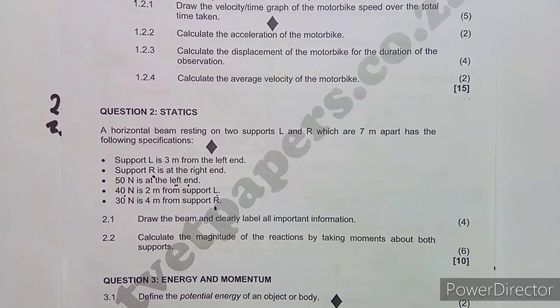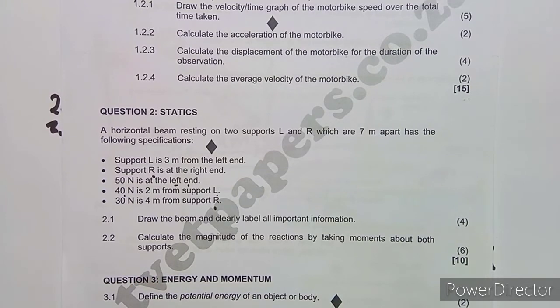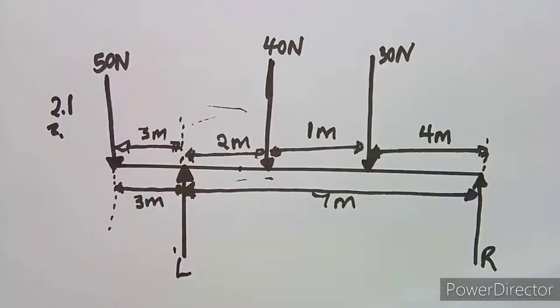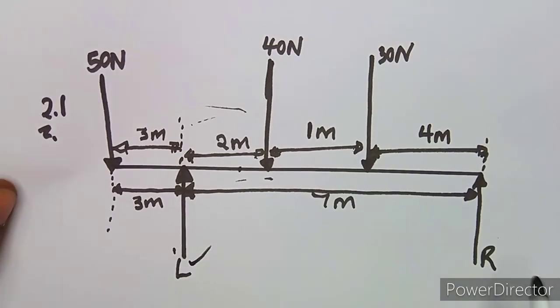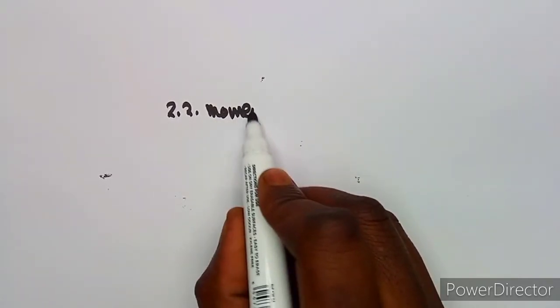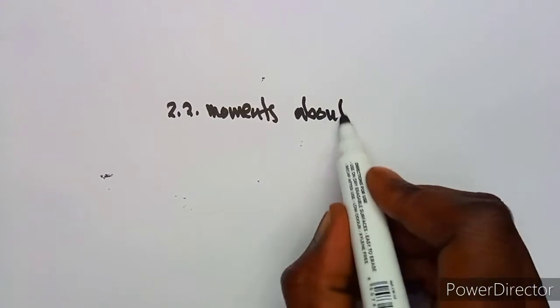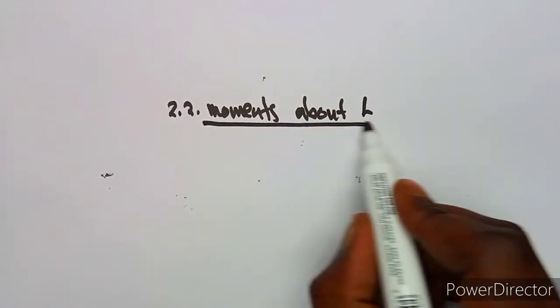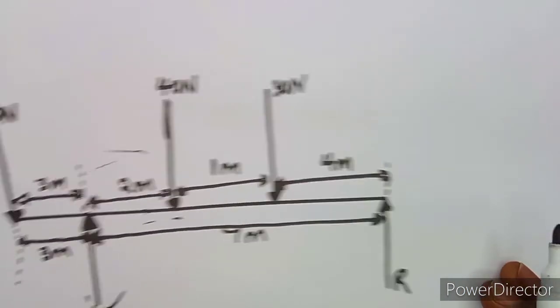Now for question 2.2: calculate the magnitude of the reactions by taking moments about both supports. We need to take moments about L and also about R. Let's start with moments about L.